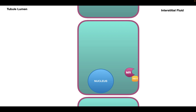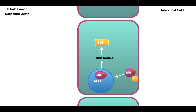The second region where aldosterone exhibits its effects is the collecting ducts of the nephron. Aldosterone passively diffuses into the cell and binds to the mineralocorticoid receptor, which then translocates into the nucleus and increases the transcription of SGK1 mRNA. This SGK1 mRNA is then translated into the SGK1 protein, which has a number of effects.